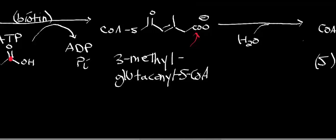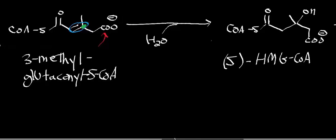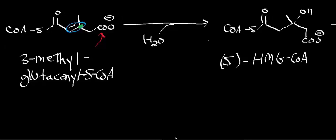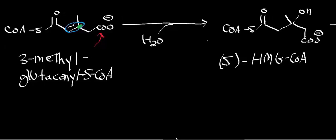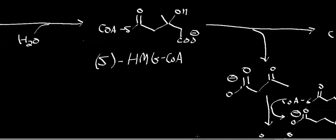Now we're going to hydrate this double bond — this alkene. The carbon being hydrated is highlighted here. The next enzyme is 3-methylglutaconyl-S-CoA hydratase, and when we do that, we get hydroxymethylglutaryl coenzyme A, or HMG-CoA. Specifically, this carbon is the S-isomer.